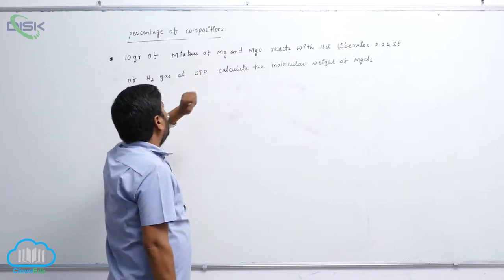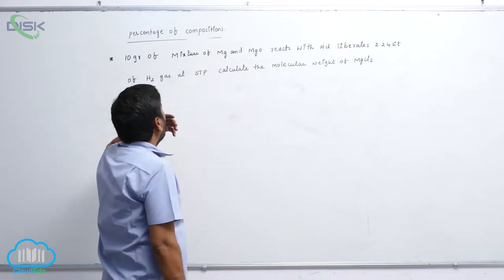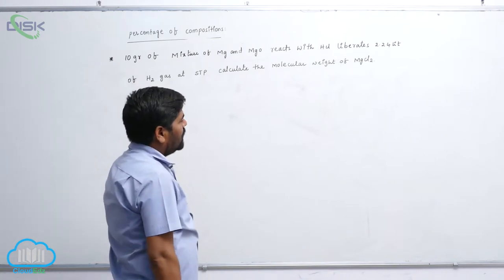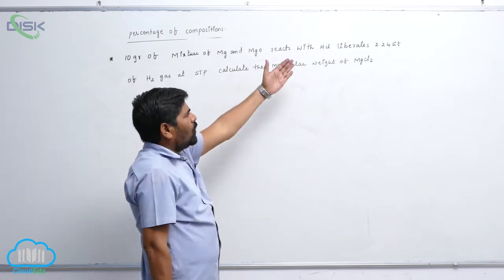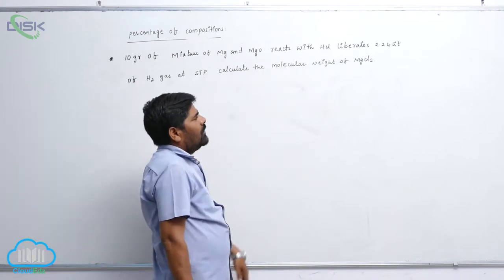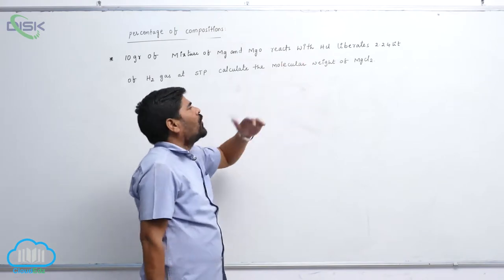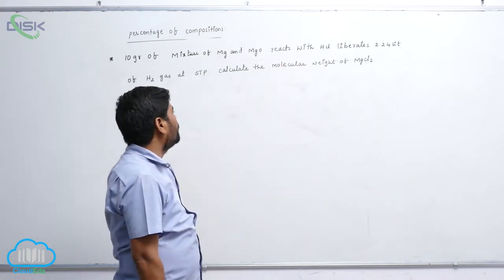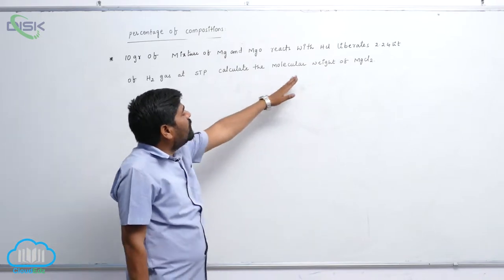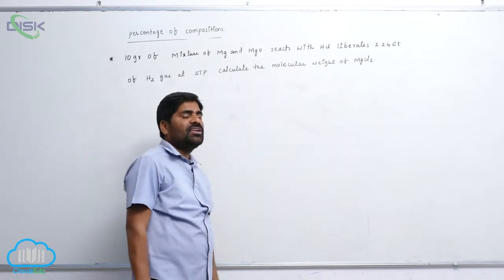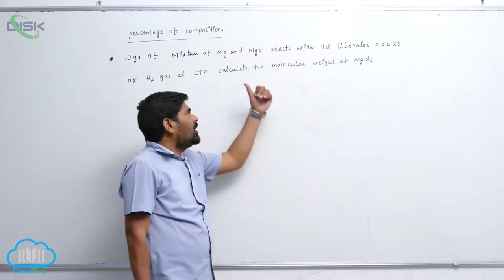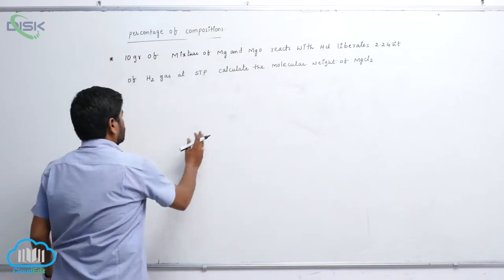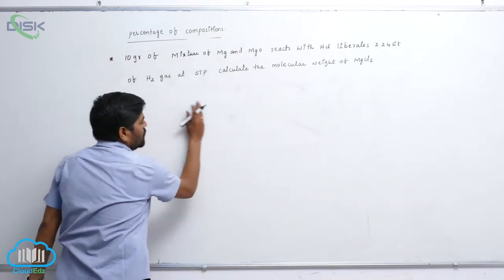10 grams of a mixture of magnesium and magnesium oxide reacts with hydrochloric acid and liberates 2.24 liters of H₂ gas at STP. Calculate the mass of magnesium chloride produced from this particular mixture.